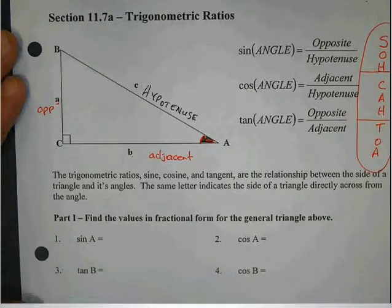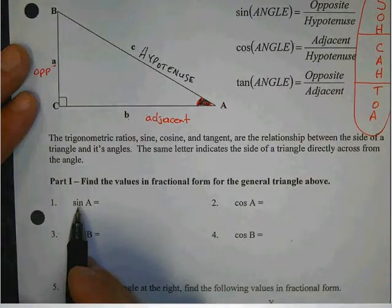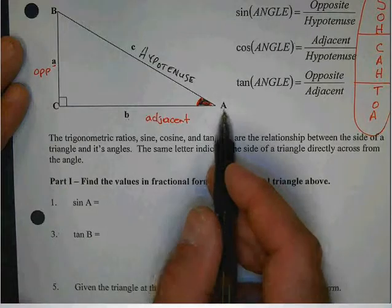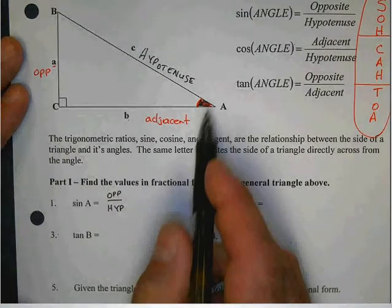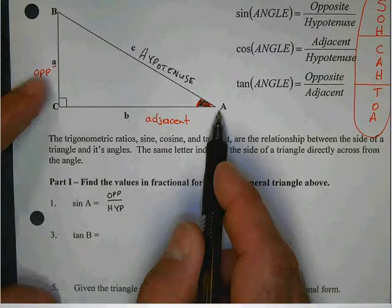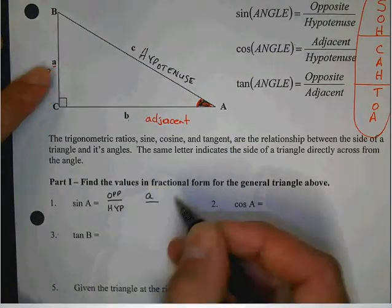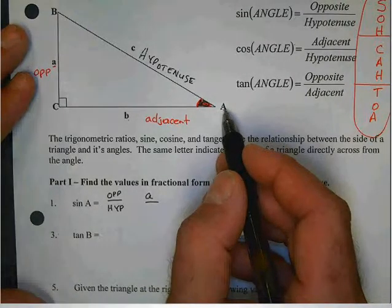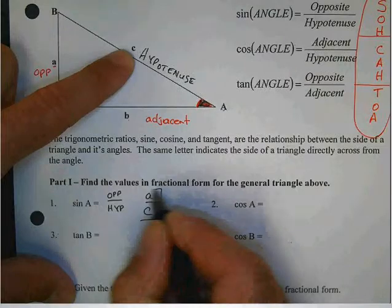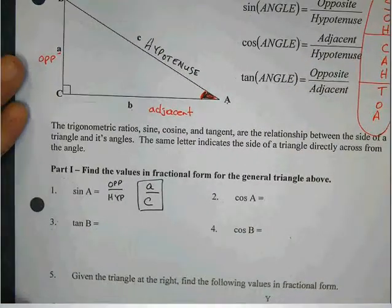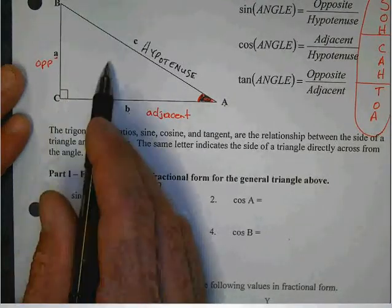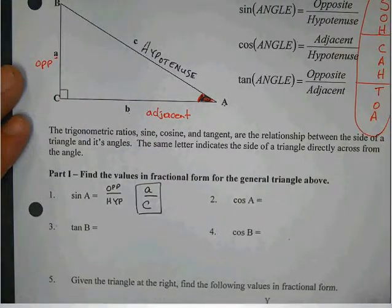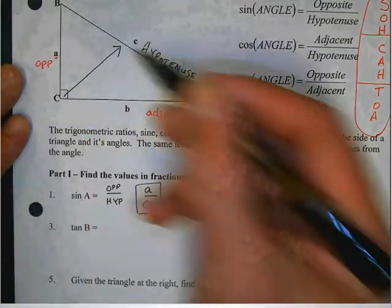So let me kind of show you how this applies down here. If I ask you to find the sine of A, we look at this angle. And I want you to think sine. That's opposite over hypotenuse. So comparison to this angle, what letter is opposite? This little a. And compared to this angle, what side is the hypotenuse? C. So the sine is a over c. The hypotenuse is always opposite the right angle.